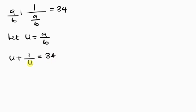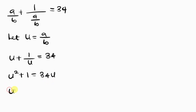Now I need to remove the fraction by multiplying through by the LCM, which is u. Multiplying through by u gives u squared plus 1 equals 34u. Rearranging this quadratic expression, I have u squared minus 34u plus 1 equals 0.